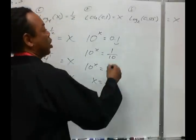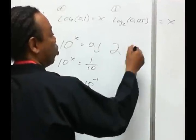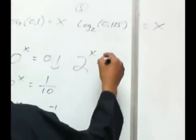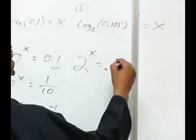Number 8. Okay. We have a base of 2. We're going to use the x as the exponent. And, this will all equal 0.125.